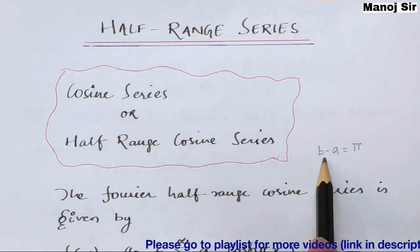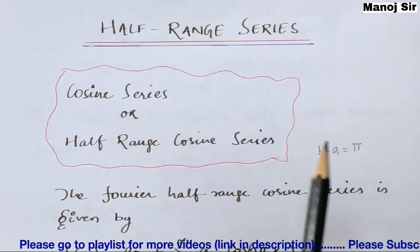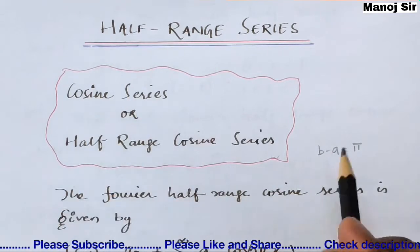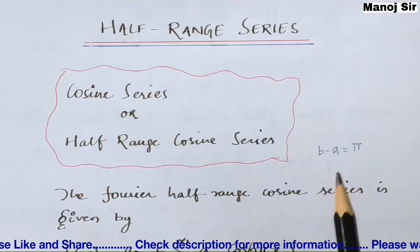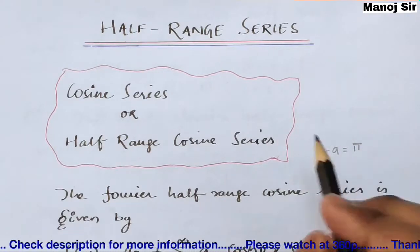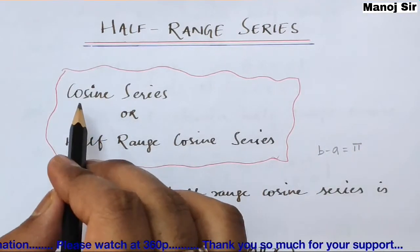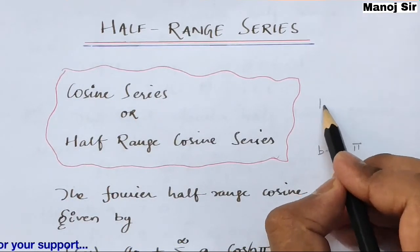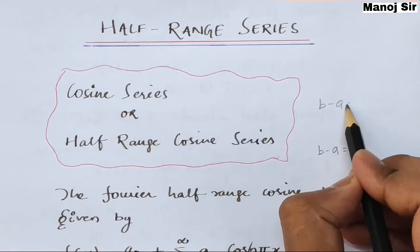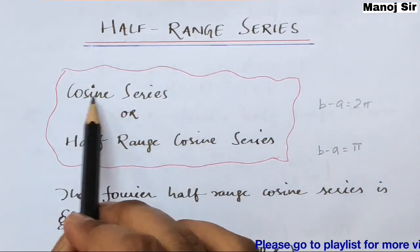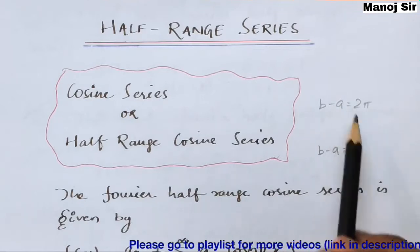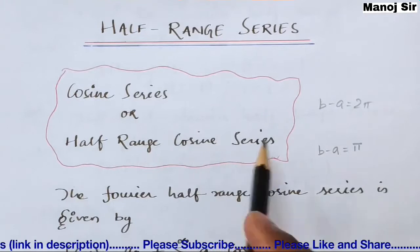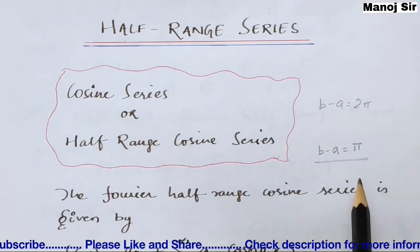So if the problem asks 'find the Fourier half range cosine series,' then B minus A equals π. If it asks 'find the Fourier cosine series,' we also take B minus A equals π — but there are some exception cases where it may ask for the Fourier cosine series with B minus A equals 2π. If the question says 'half range cosine series,' we always take B minus A equals π.